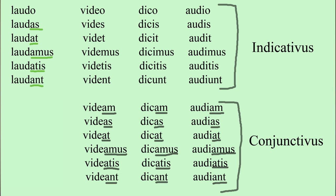So we see that in the second, third, and fourth conjugation, the subjunctive endings are: am, as, at, amus, atis, ant. However, in laudare, the indicative present tense is: laudo, laudas, laudat, laudamus, laudatis, laudant. Since those endings are already used up in the indicative, we have to have some other ending to express the subjunctive mood.